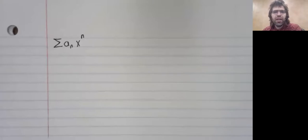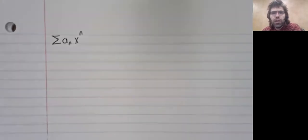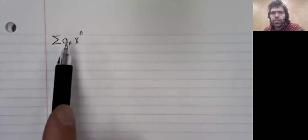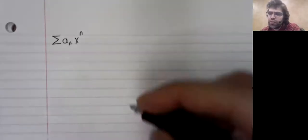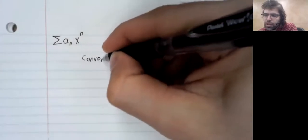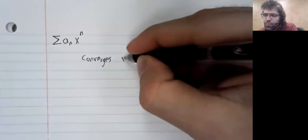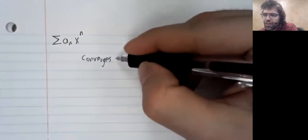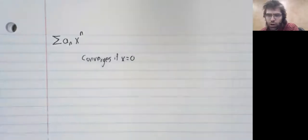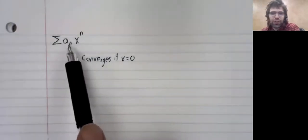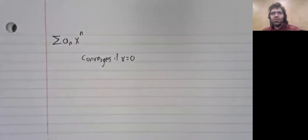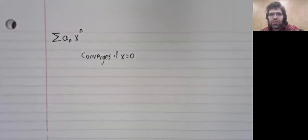So suppose we have a power series. Right out the gate, we can say there's a value that this power series converges for. In particular, if x equals zero, this power series definitely converges to zero. So the question then becomes, are there any other values where the power series converges?